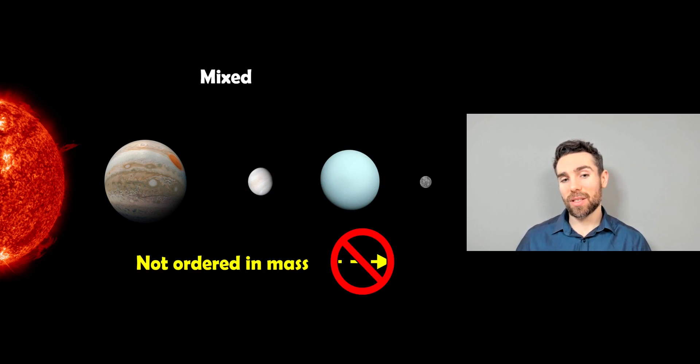And then you have mixed. So in this sort of situation, the planets are not ordered in mass; in fact, they are randomly distributed—not necessarily randomly, but they are mixed. So you've got big planets and small planets, then big planets, and there's no particular order there. It's not ordered in mass necessarily, so it's kind of mixed.